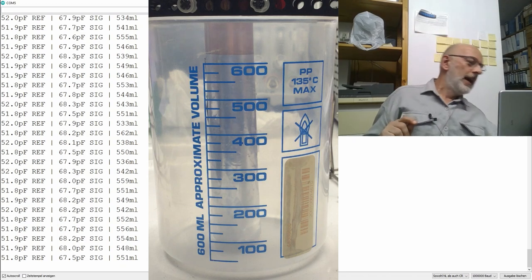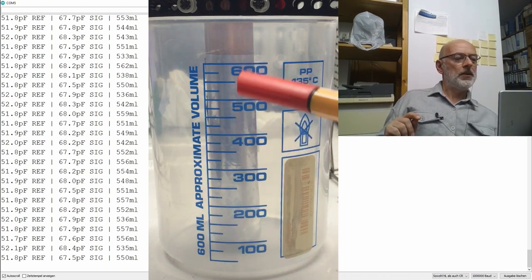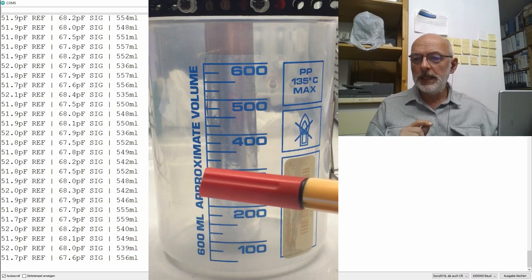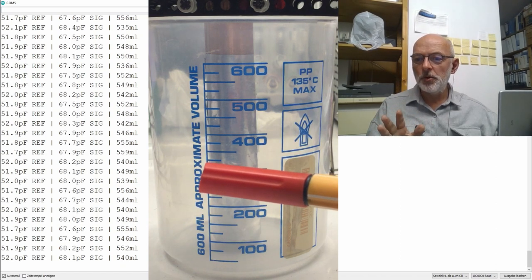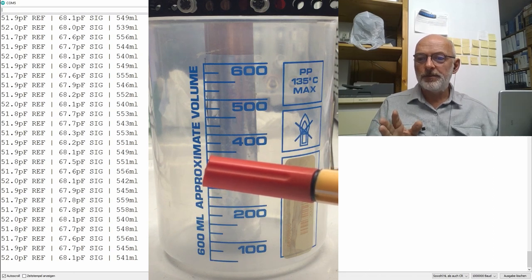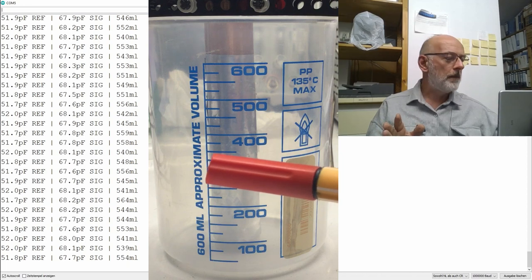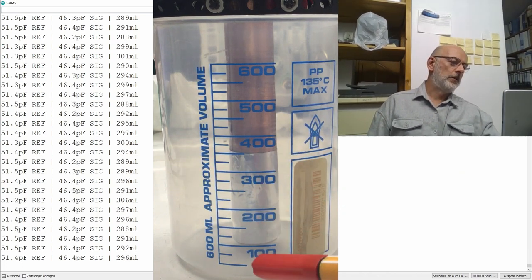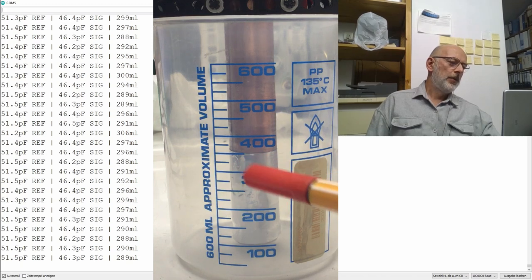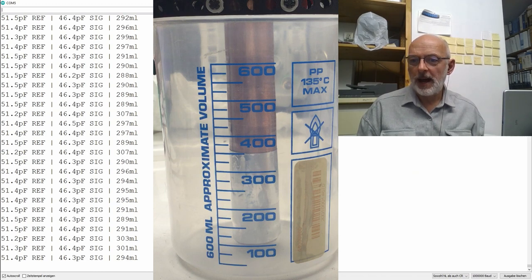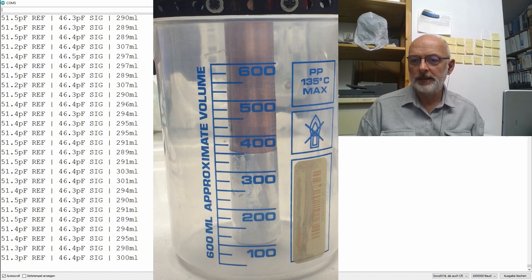Relatively tightly wrapped. And now we ask our little Arduino what it thinks the capacitance of that setup here is. And indeed, I wrapped it up here above the 600 millimeter mark. And we are reading let's say 52 picofarads for the reference sensor and let's say 68 for our signal sensor. Just so we have at least a second data point, I cut that off. And we are here at 350 milliliters. We are reading 51.5 for the reference and let's say 46.5 for the signal.